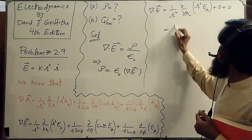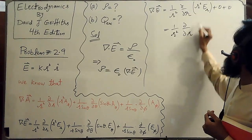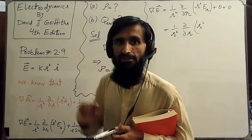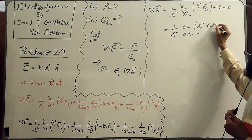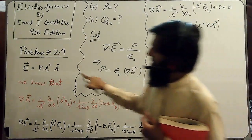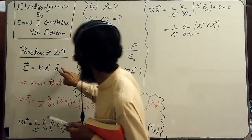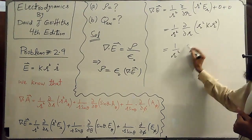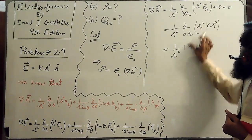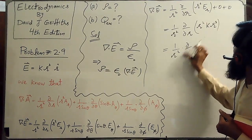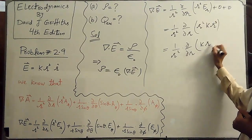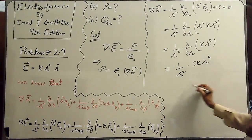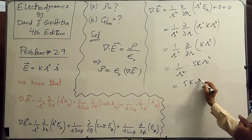So it becomes (1/R²)(∂/∂R) of R² times the radial component. The radial component is K R³, so we place K R³ here — the R-hat is just a unit vector and is not written. It becomes (1/R²)(∂/∂R)(K R⁵). Taking the partial derivative gives 5K R⁴, and after simplification it becomes 5K R².